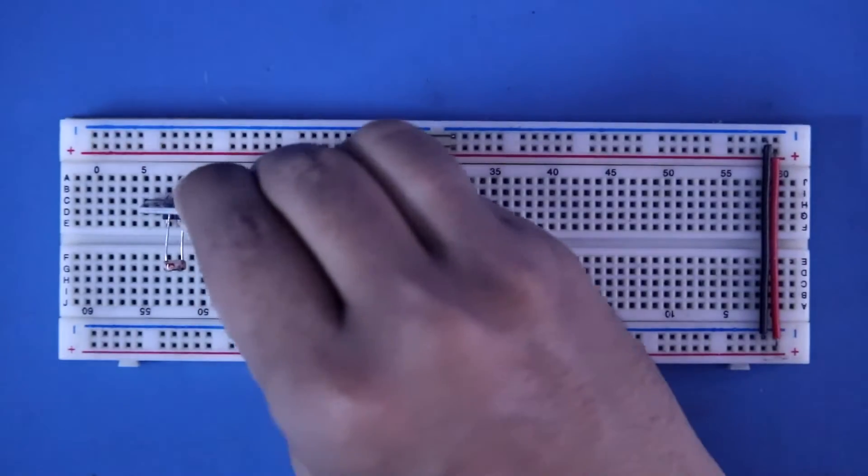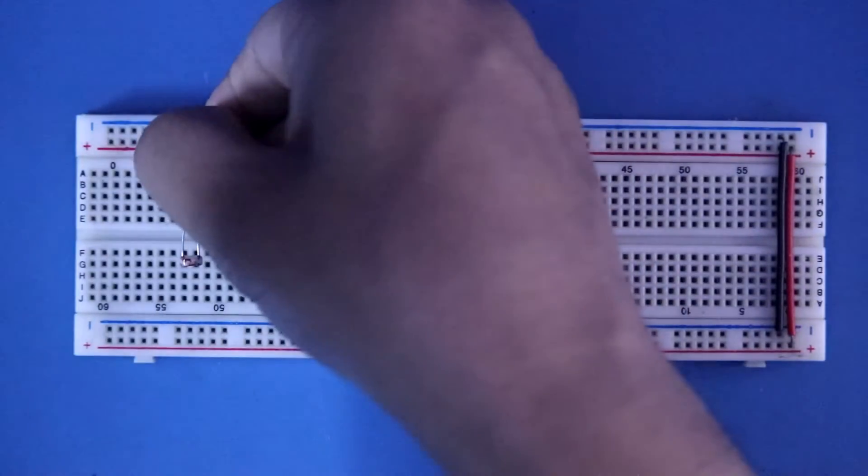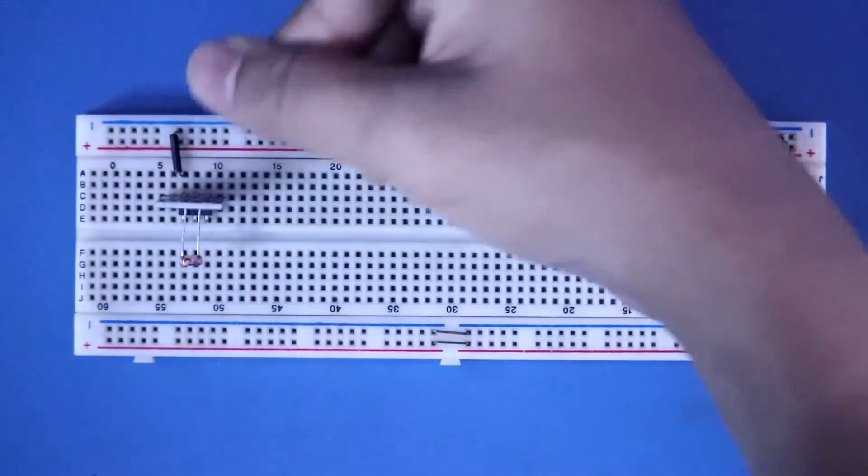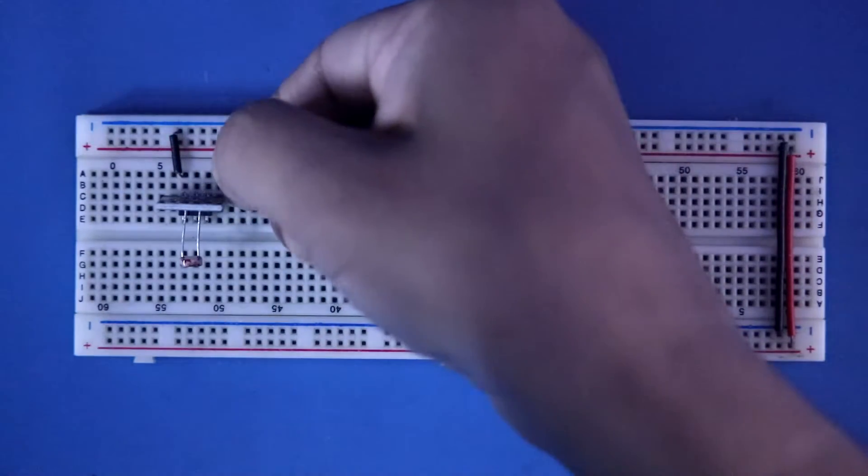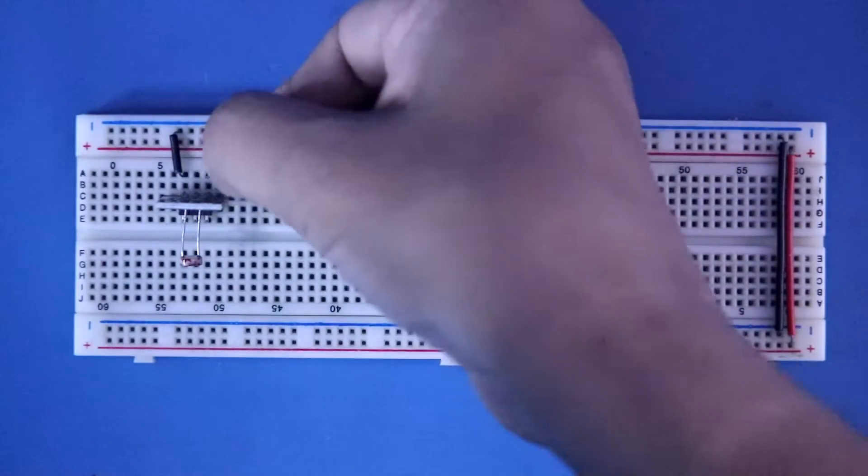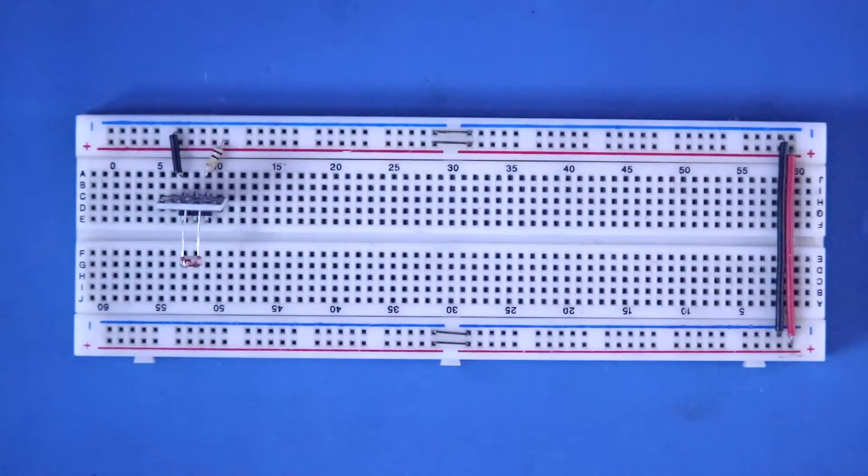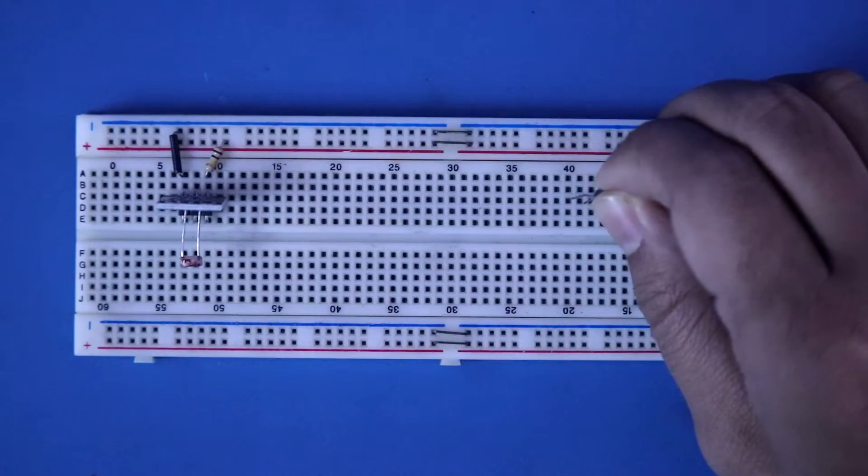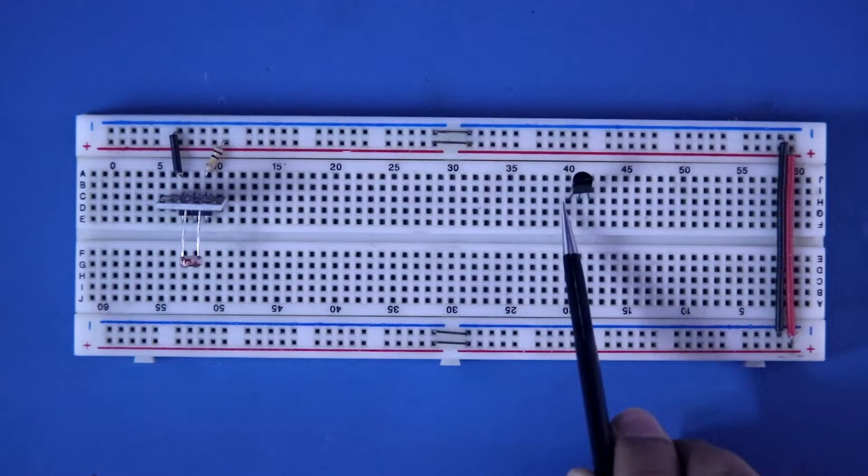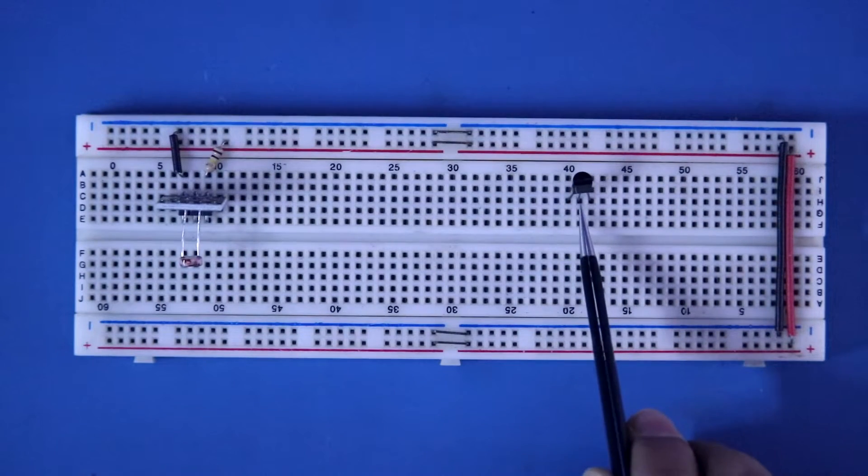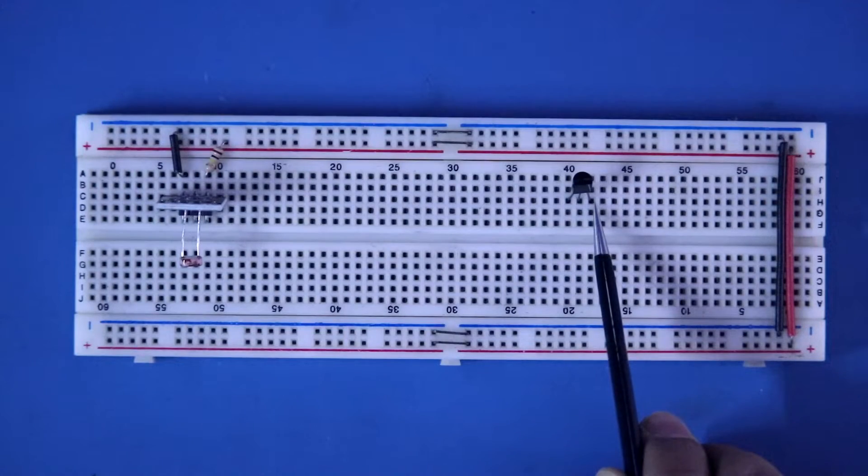Putting the sensor module. One sided pin is directly connected to the negative rail. With the other sided pin, 100 kilo ohms resistor is connected. And then it is connected to the positive rail. Putting the transistor BC548. The first pin is collector, middle pin is base, and the third pin is emitter.